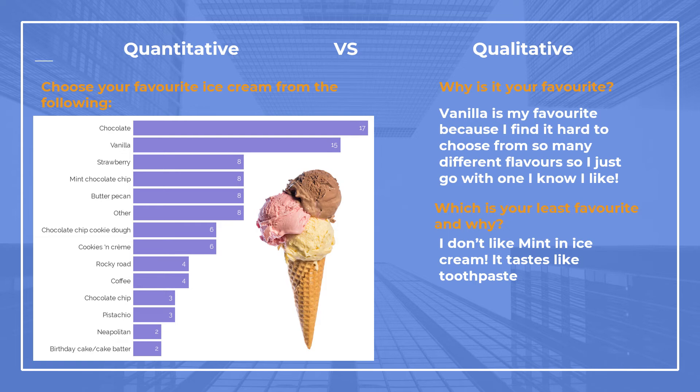With some open-ended questions you could ask, 'Why is it your favourite?' So whichever one they chose, you ask why. In this example, they said vanilla is their favourite because they find it difficult to choose from so many options, so they go with one they know will be nice. And for least favourite: 'I don't like mint ice cream — it tastes like toothpaste.' So open-ended answers give you more insight into why people chose certain options.